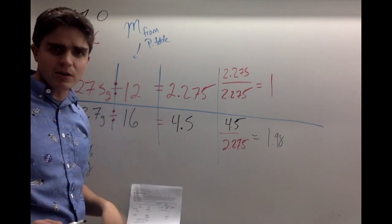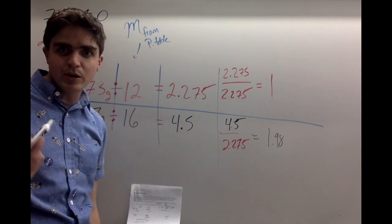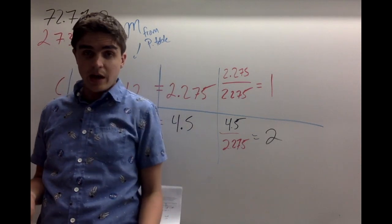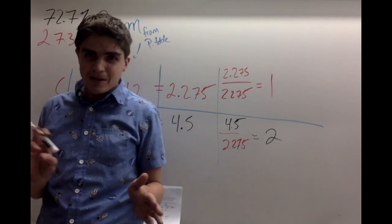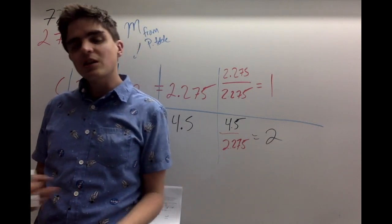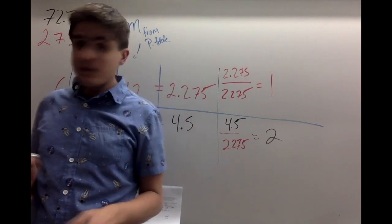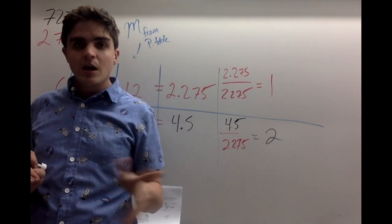Now remember, I rounded. So what I'm going to do is I'm going to pretend that 1.98 isn't actually 1.98, but it's rather 2. And you have to be careful when you round here. I will say don't round more than a tenth. So if it's like 1.92, 1.93 should round up. If it's 1.5, don't round up. Something else is going to happen.